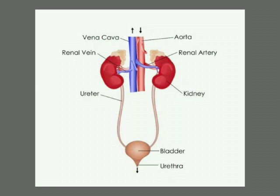Next is urethra. It is an opening through which the urine is thrown out — the passage by which urine is discharged or excreted from the bladder. The passage through which urine is excreted from the bladder is called the urethra.